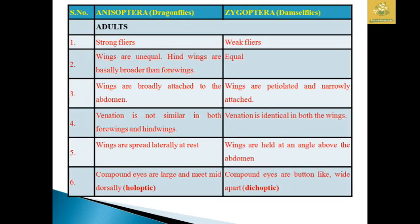The difference between Anisoptera (dragonflies) and Zygoptera (damselflies): dragonflies are strong flyers; damselflies are weak flyers. In dragonflies wings are unequal and hindwings are broader than forewings; in damselflies wings are equal and narrowly attached to the abdomen. Venation is not similar in dragonfly forewings and hindwings, but is identical in both wings of damselflies. Dragonfly wings are spread laterally at rest; damselfly wings are held at an angle above the abdomen. Dragonfly compound eyes are large and holoptic; damselfly eyes are button-like and dichoptic.